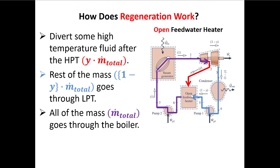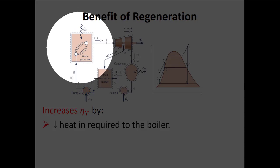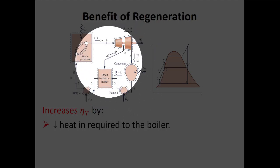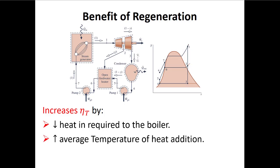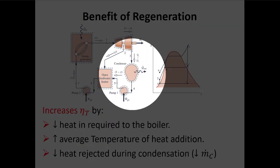When doing a problem like this, use a colored pencil to color code which fraction of the mass is going through which component or exists at which state. Unlike other Rankine cycles we've looked at, mass conservation is going to be important here because we don't have the same amount of mass going through every component. The benefit of regeneration is that we increase thermal efficiency mainly by reducing the amount of heat required to boil the water. This water coming through the condenser gets preheated, which increases the average temperature of heat addition and lowers the heat rejected in the condenser.